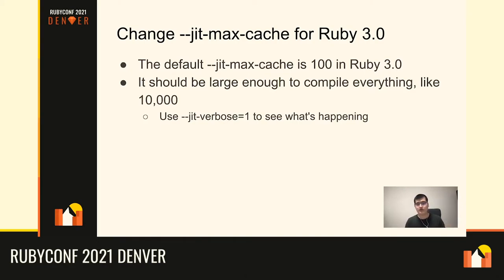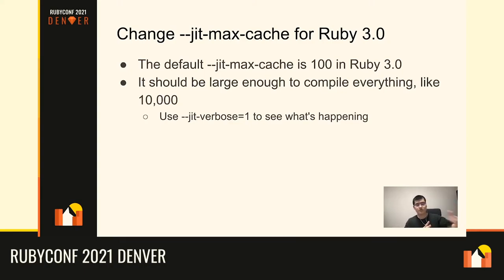The reason we released Ruby 3.0 with a default of 100 is that we believed only a small number of compiled methods was ideal — compiling too many methods wouldn't fit in the CPU cache. However, we found that compiling everything actually improves CPU cache efficiency, because the compiled code ends up in compact, nearby locations, making execution more predictable than repeatedly returning to the virtual machine.